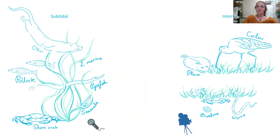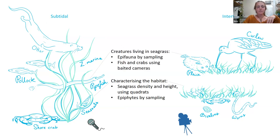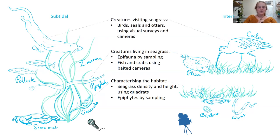Here's a summary of my methods at each site. On the left is a drawing representing creatures I saw in the subtidal seagrass, and on the right the intertidal. First, I characterized the habitat by looking at seagrass density and height using quadrats, and I took samples to look at epiphytes — algae growing on the seagrass. Moving up the food chain, I collected seagrass blades with epifauna — snails and things living on the seagrass — then used baited cameras to look at fish and crabs.